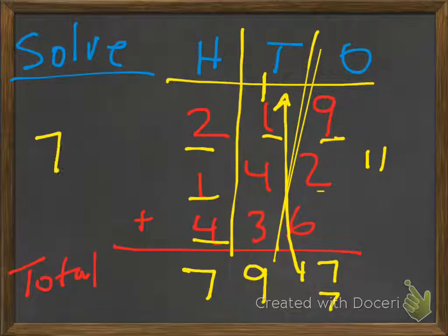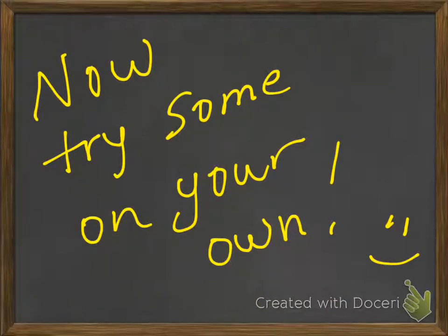So actually our number is 797. Is that close to our estimate? Pretty close. Not exact, but close. Alright. Now try some on your own. Good luck.